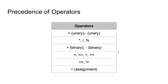Since we have added some operators, there is a change in the precedence of operators. The new precedence is: first, unary plus and minus; then multiplication, division, and modulus; then binary addition and subtraction; then less than, less than or equal to, greater than, and greater than or equal to; then equal to and not equal to; and at the bottom of the precedence ladder is the assignment operator.